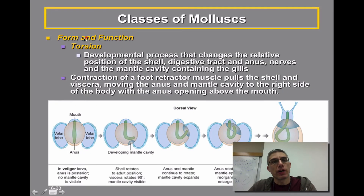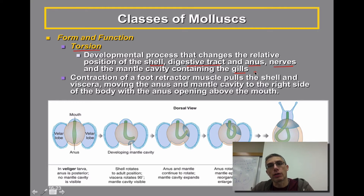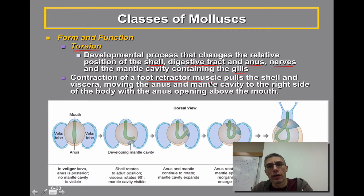When you talk about gastropods, it's really important that we discuss a process called torsion. Torsion is a process that is going to change the relative position of the shell, the digestive tract, and the anus, the nerves of the animal, and also the mantle cavity that contains the gills or the lung of the animal, depending on whether you're talking about an aquatic or land-dwelling gastropod. This happens by contraction of a foot retractor muscle.